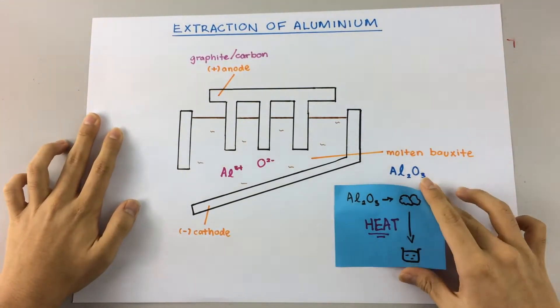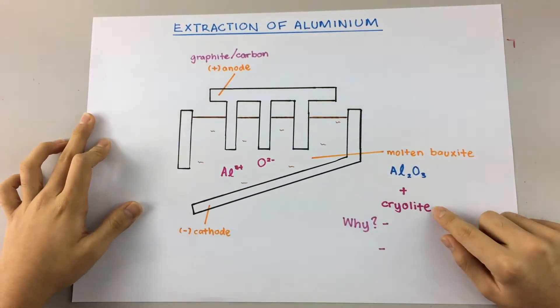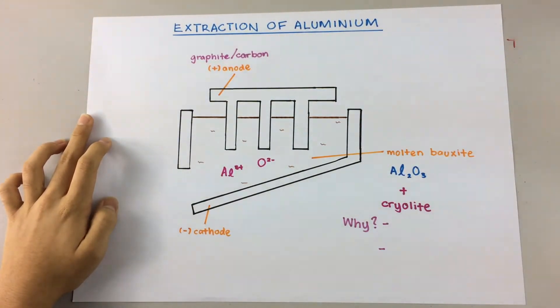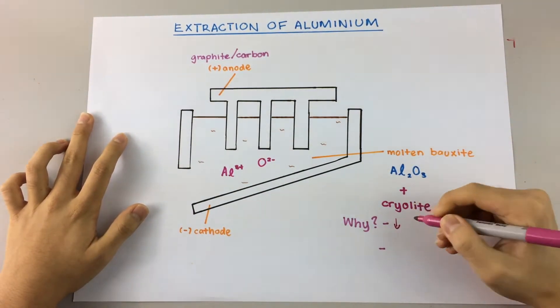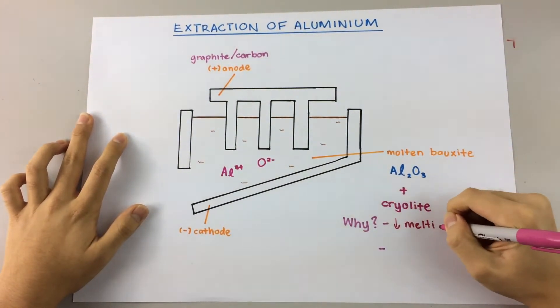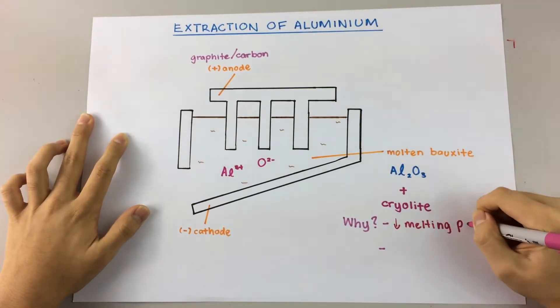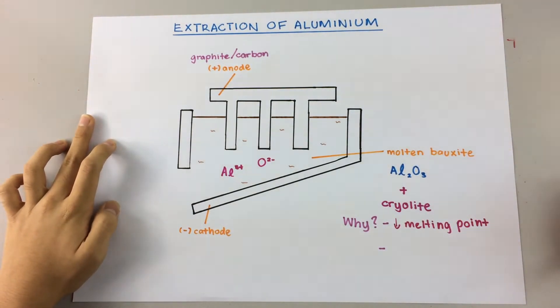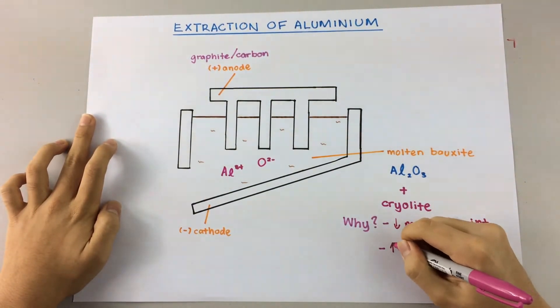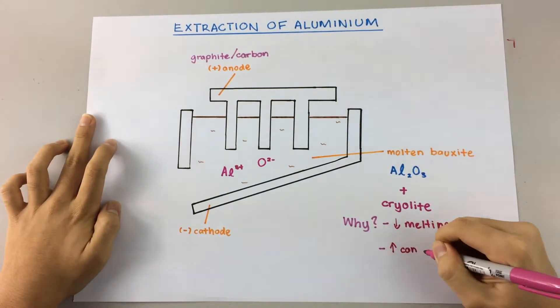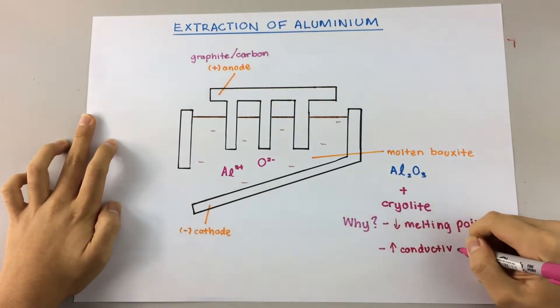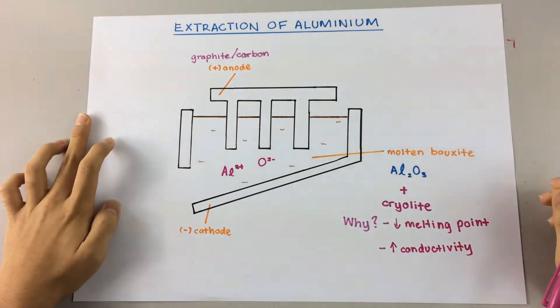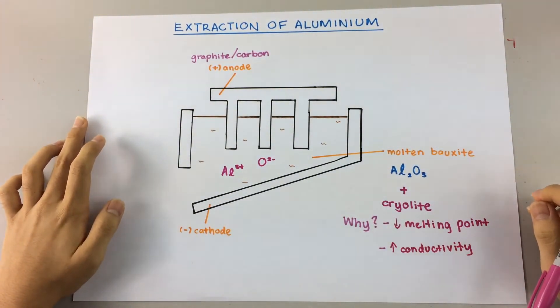So how we solve this is we add cryolite. And cryolite helps a lot in this extraction because it helps lower the melting point of the aluminum oxide to about 900 degrees Celsius instead of 2,000 degrees Celsius. This saves a lot of energy and now it requires much less heat to melt the aluminum oxide. And the second thing that cryolite does is that it increases the electrical conductivity of the molten bauxite, which helps speed up the electrolysis process even more.